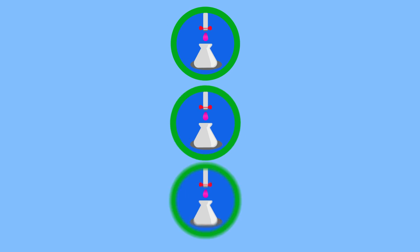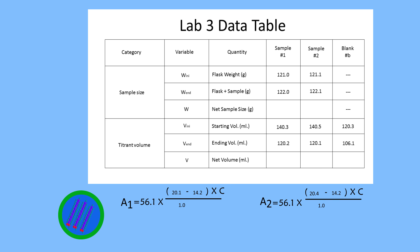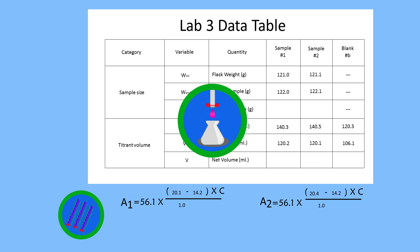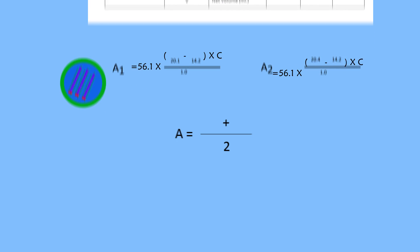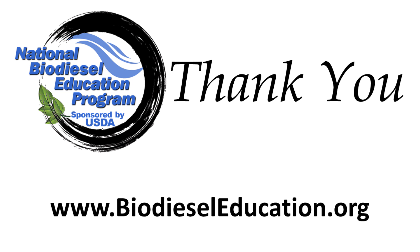Once the three titrations have been completed and the data recorded, calculate the acid number for the two samples. The acid number from both samples should be about the same. If not, another titration is recommended. Otherwise, add the numbers and divide by two for the average acid number. Thank you for watching the Determination of Acid Number of Vegetable Oils by Titration Lab on the Fundamentals of Biodiesel. Please go to the Biodiesel Education website for a complete written transcript of this lab exercise.